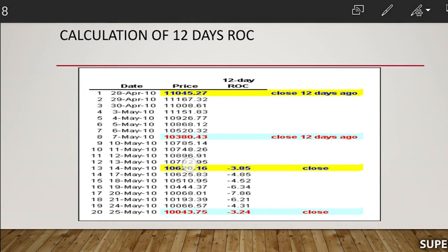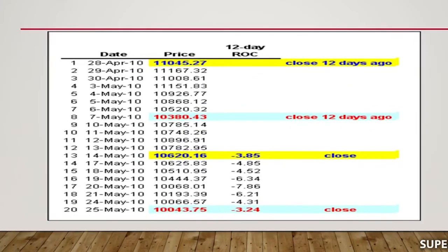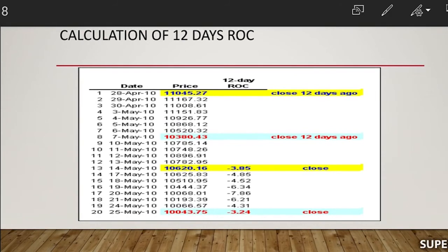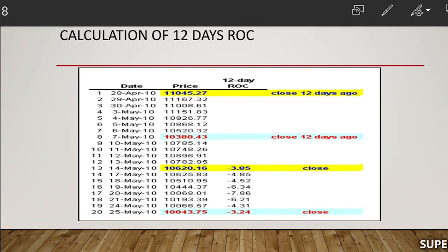On 14th May 2010, the current closing price is 10,620.16 — you can see this yellow figure. The closing price 12 days back from 14th May 2010 is 11,045.27. The rate of change is calculated as: (10,620.16 ÷ 11,045.27) − 1 × 100, giving an ROC of minus 3.85 on 14th May.